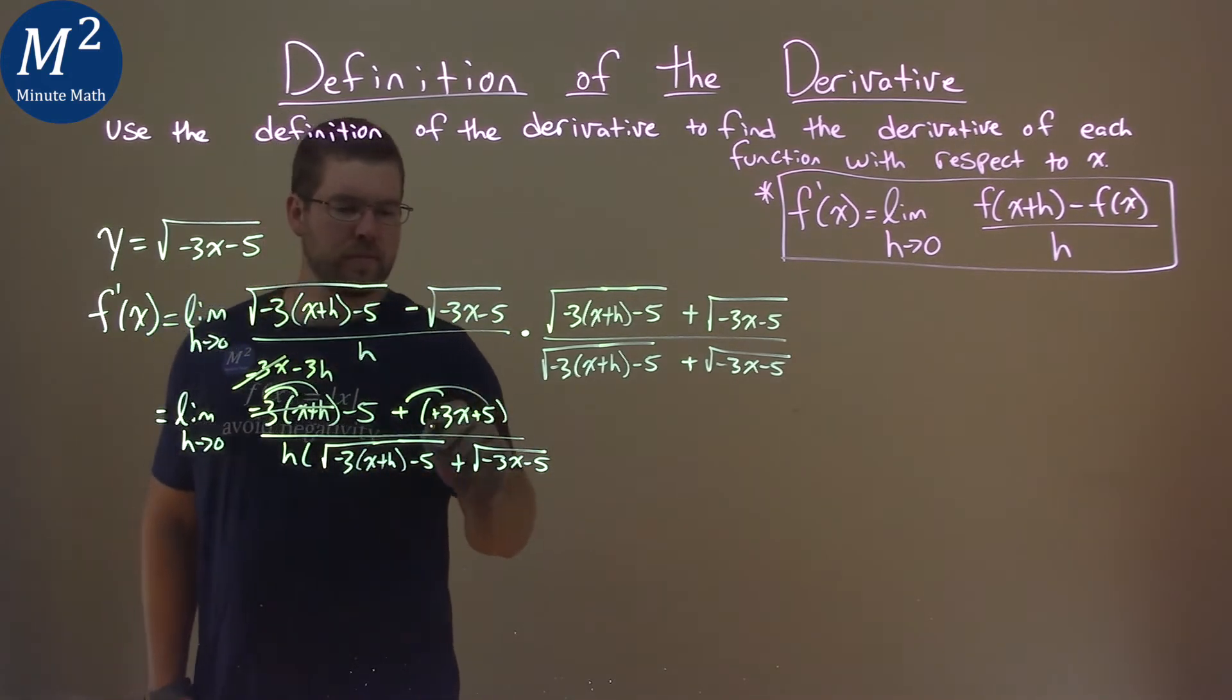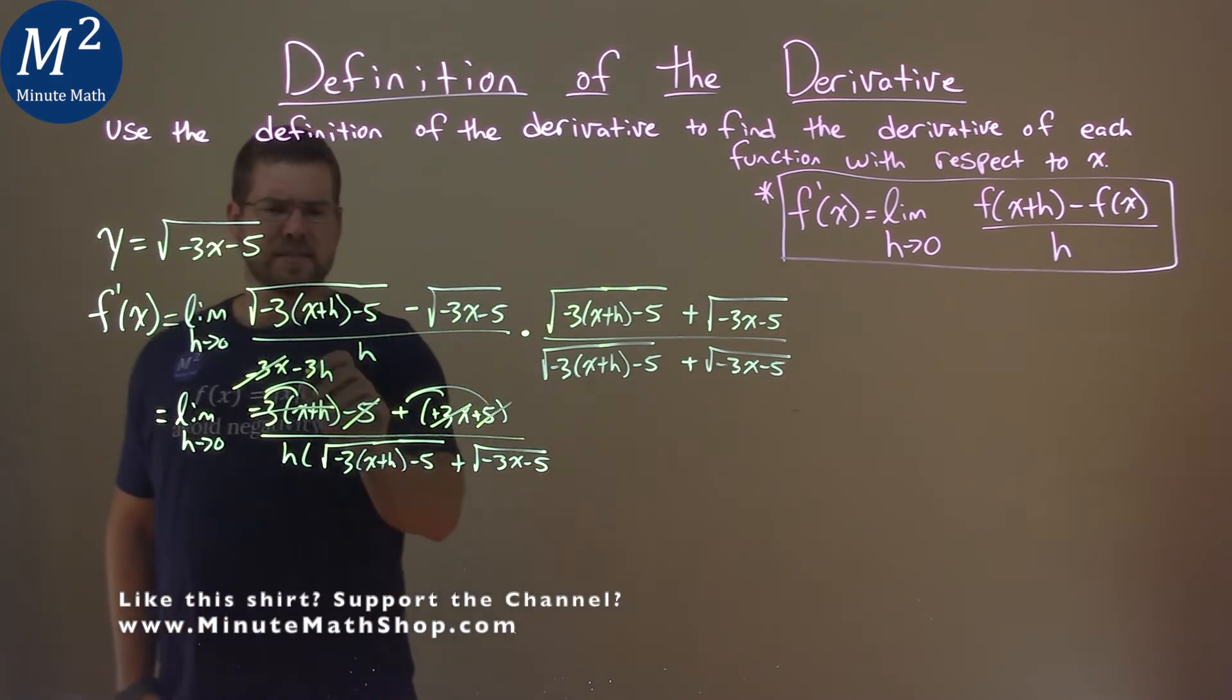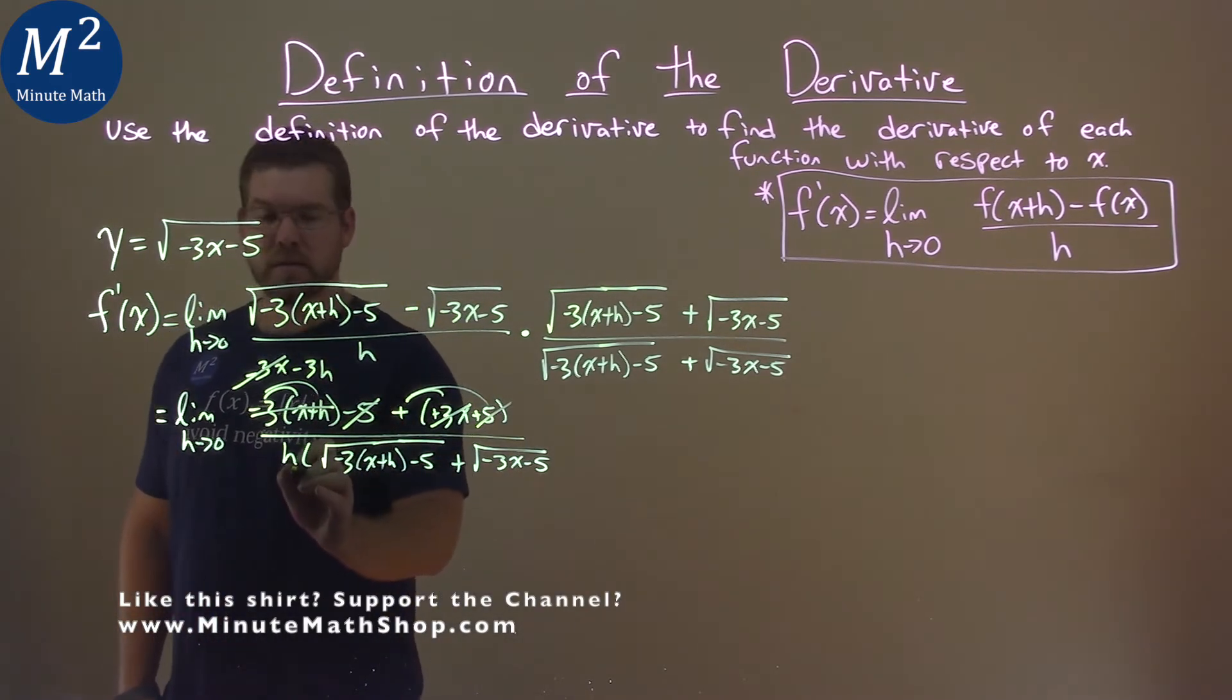Negative 3x, positive 3x cancels. Negative 5 and a positive 5 cancels. And we're left with just this negative 3h, but there's an h down here. Cancel that out right there.